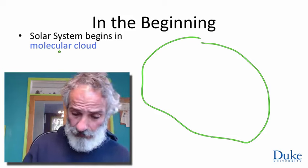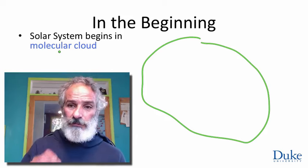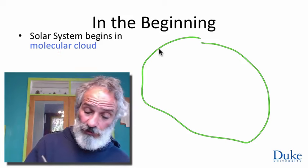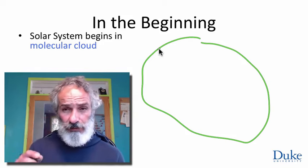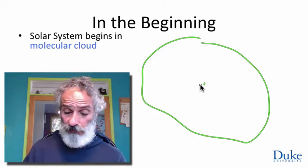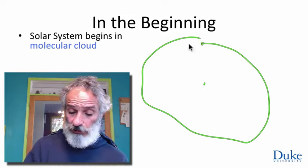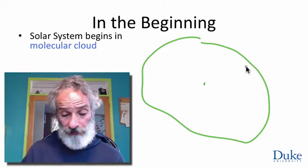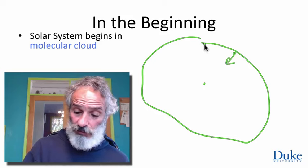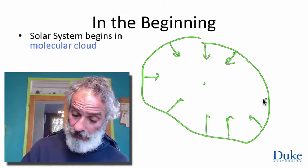Inside this molecular cloud — wait a minute, this is already a problem, and it's a problem that will haunt us throughout the rest of the class. The problem is gravity. The idea of a large cloud of hydrogen floating around in space makes no sense, because if you're an atom near the edge of the cloud, the net effect of gravity is to attract you towards the center. Gravity applies a contracting pressure to every object.